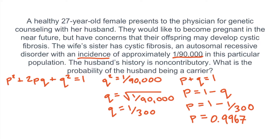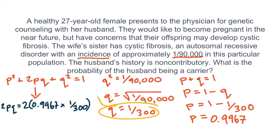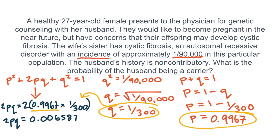Now that we know P and Q, we multiply these by 2 to get 2PQ. The probability of the husband being a carrier is 0.006587. This math took quite a while, which is why on Step 1 you should know how to use a shortcut to save time.